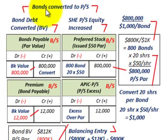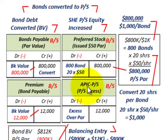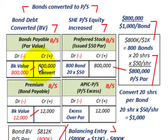Let's look at how we record this. We have bonds that are going to be converted to preferred stock. We're going to have a bonds payable account, a premium account on bonds payable, and then we're going to issue preferred stock. We're also going to involve some additional paid-in capital for preferred stock.